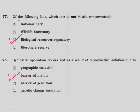Question 77: Of the following four, which one is not in-situ conservation? In-situ conservation means conservation where the organism is naturally present — so National Park, Wildlife Sanctuary, and Biosphere Reserve are in-situ. A biological resource repository (seed bank), where seeds or plants are stored, is not in-situ conservation. Correct answer is option C.